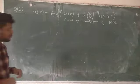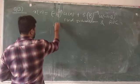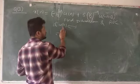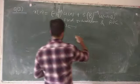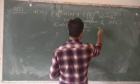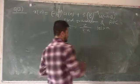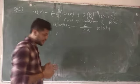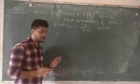To solve this, compare with basic Z-transform pairs. We know a^n·u(n) has Z-transform z/(z−a) with ROC |z| > |a|. The magnitude of z represents the radius of a circle, which cannot be negative, so we take the modulus.